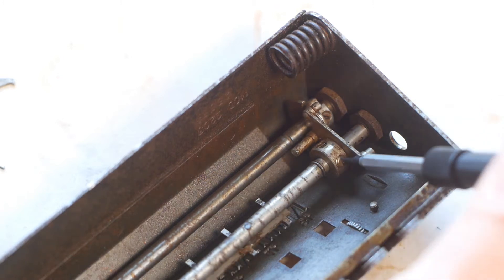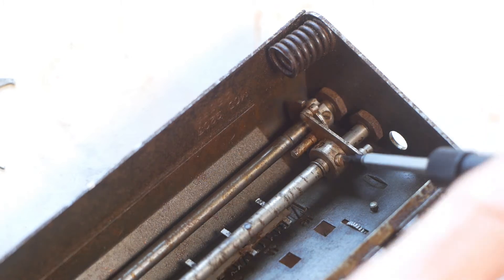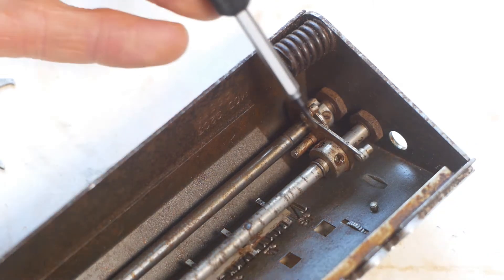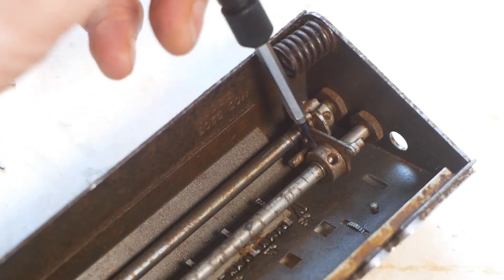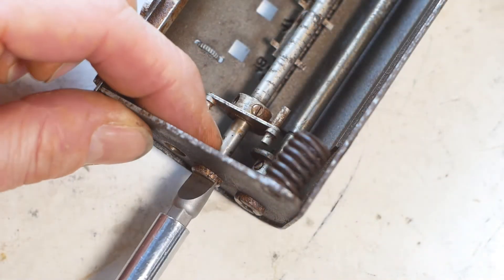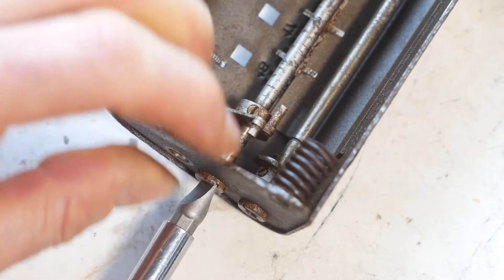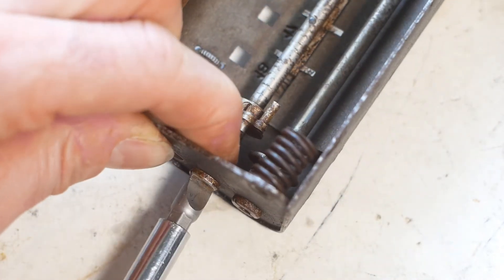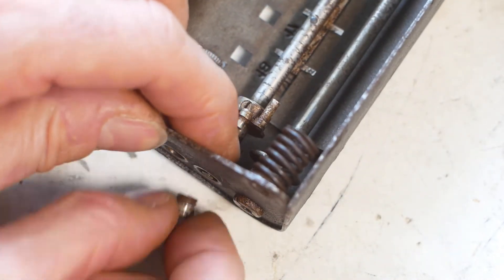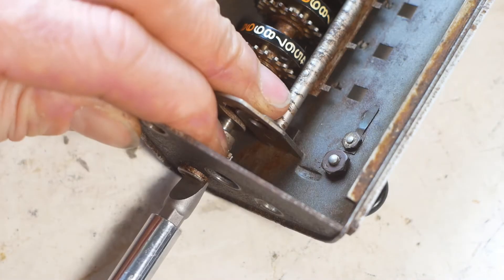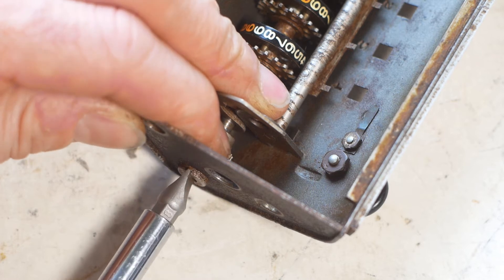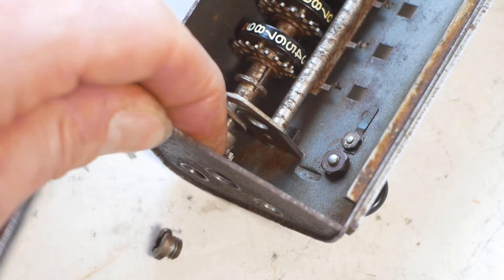Another thing I forgot to mention earlier, I scribed alignment marks on all the components before I took the carriage apart, in an attempt to make reassembly easier. Now we can remove the bearings from the far end of the rocker shaft and the countershaft, remembering that there will probably be some shims in these. And also, the bearing from the drive end of the countershaft can come out at this stage.